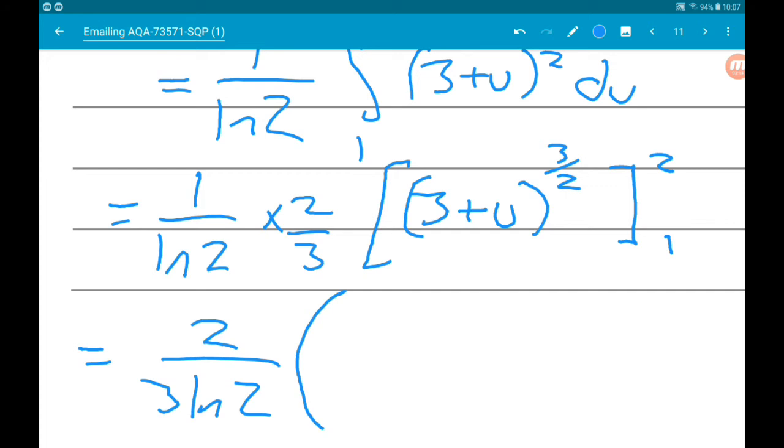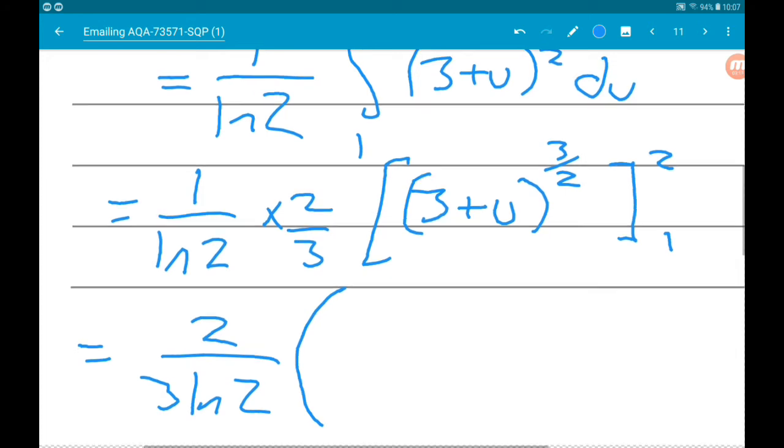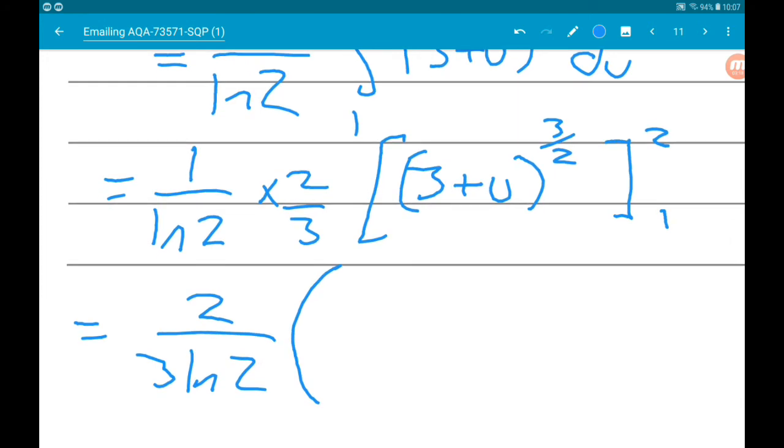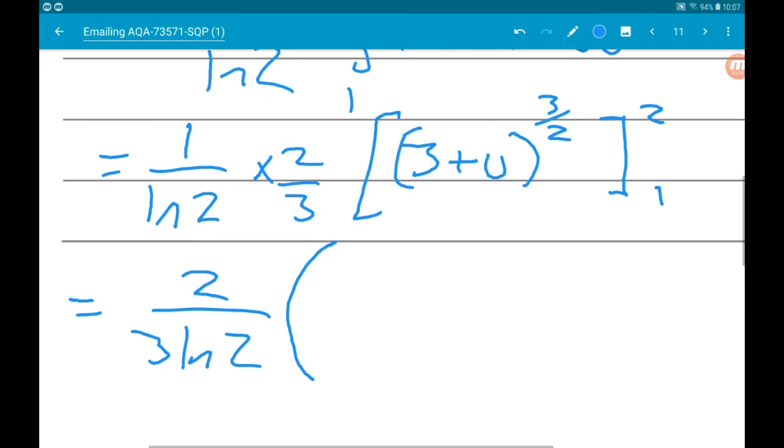So we're going to get that times (3 + 2) to the three halves, so that's 5 to the three halves, minus (3 + 1) to the three halves, so that's 4 to the three halves.